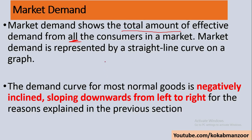Market demand is negatively inclined, so the market demand curve DD slopes downward from left to right. The demand curve for most normal goods is negatively sloped.